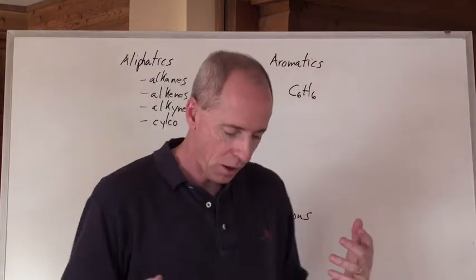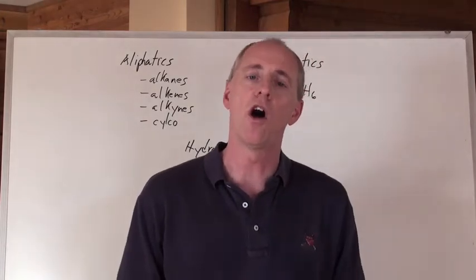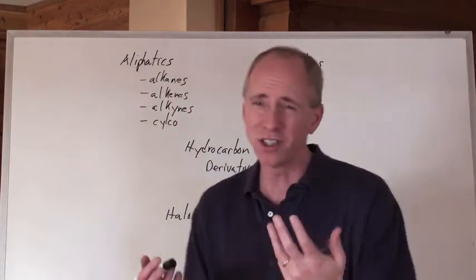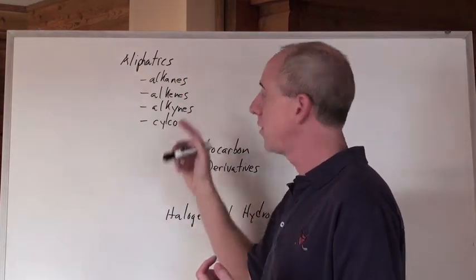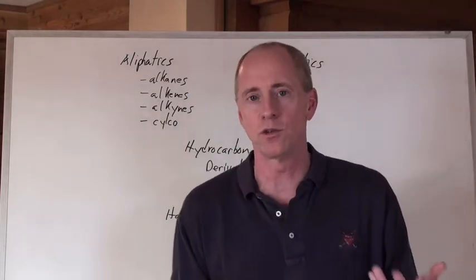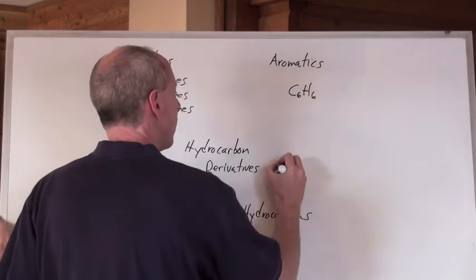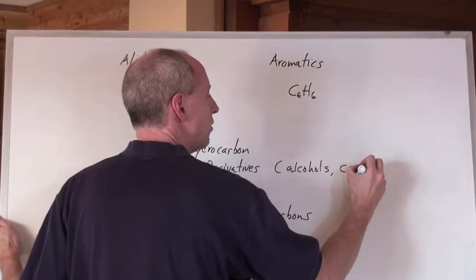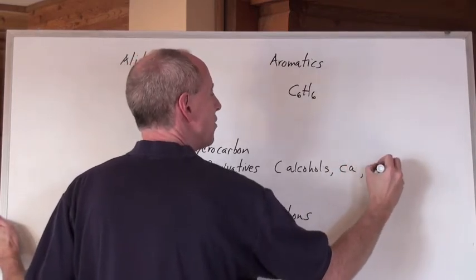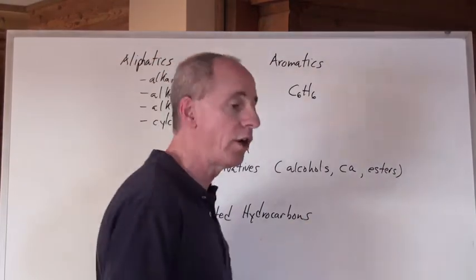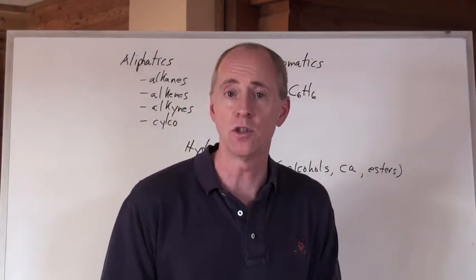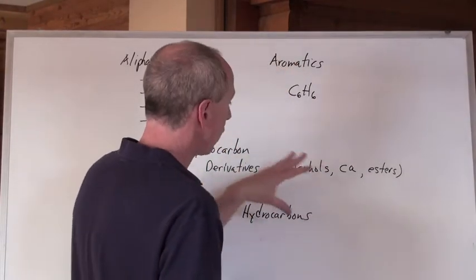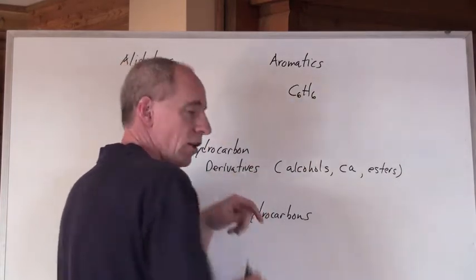Aromatics are chemicals that have a benzene ring in them called C6H6. Hydrocarbon derivatives are when we attach things called functional groups onto various hydrocarbons. A functional group could be an alkene or alkyne. Double and triple bonds are considered to be functional groups as well. And so are things like alcohols which are OHs, and carboxylic acids which are COOH, and esters. Those are functional groups, as well as amines, amides, ketones, and aldehydes.